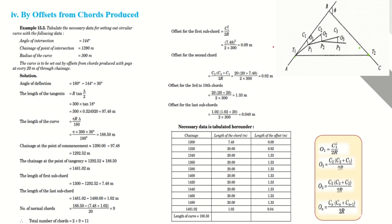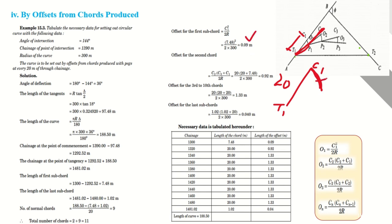Now the final step: how to lay off these offset distances in the field. Draw a tangent line at the start of the curve (T1). Measure along that tangent line the sub-chord length C1 to locate a temporary point. From there, swing an arc. The offset distance from the tangent line is 0.09 m — this gives the first point on the curve.